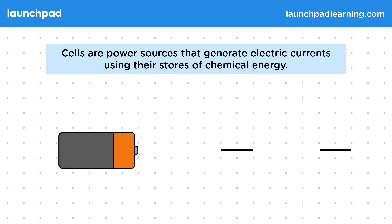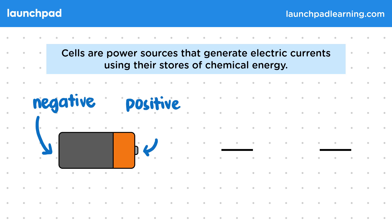You won't need to know the details of how a cell works for your exams. But you should be able to recognise that it has a negative and a positive terminal. These will determine the direction an electric current flows around a circuit. The circuit symbol for the cell consists of these two lines with a plus sign next to the longer line.